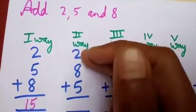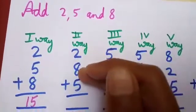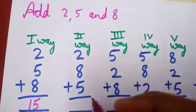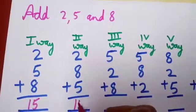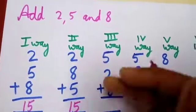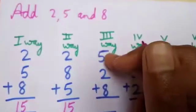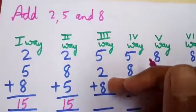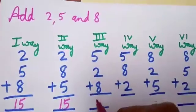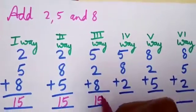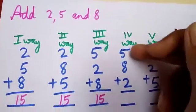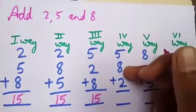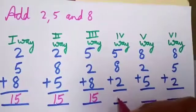Second way: 2 plus 8 is 10, and 10 plus 5 is 15. Third way: 5 plus 2 is 7, and 7 plus 8 is 15. Fourth way: 5 plus 8 is 13, and 13 plus 2 is 15.